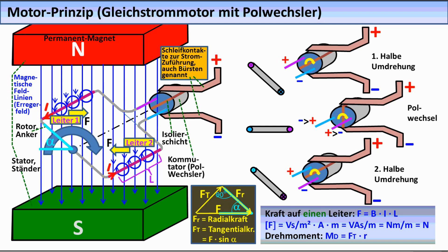Bringt man nun in das Magnetfeld eine drehbar aufgehängte Spule statt des einzelnen Leiters, die zunächst nur mit einer Windung ausgestattet ist, so gelten die gleichen Gesetzmäßigkeiten. Auf den linken Leiter, bei dem der Strom aus der Zeichenebene herausfließt, wirkt eine Kraft nach rechts. Auf den anderen Leiter, dessen Strom entgegengesetzt gerichtet ist, wirkt eine Kraft nach links. Da die beiden Leiter nur eine Drehbewegung machen können, wirkt sich nur der Teil der Kraft F aus, der tangential zur Drehbewegung gerichtet ist. Diese Tangentialkomponente FT ist gleich F mal Sinus Alpha. Die Kraft ist also am größten, wenn die beiden Leiter senkrecht übereinander stehen, und am kleinsten, wenn sie die äußerste linke oder rechte Position einnehmen.